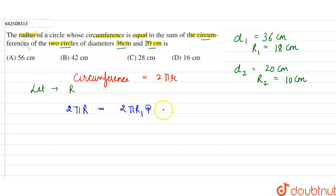Let's take 2π common from the right-hand side. This gives us 2πr equals 2π(r₁ + r₂). We can cancel 2π from both sides, so r equals r₁ plus r₂. Since r₁ is 18 centimeters and r₂ is 10 centimeters, we get 18 plus 10 equals 28 centimeters.